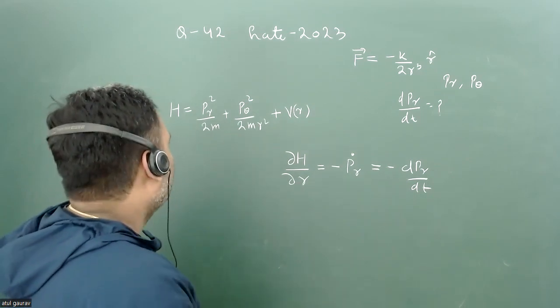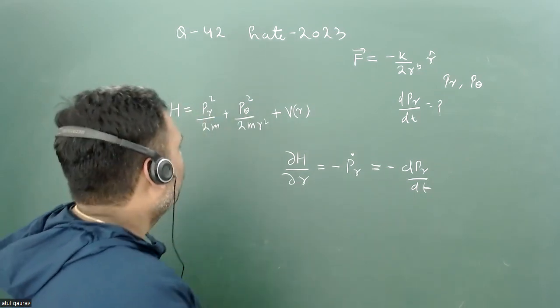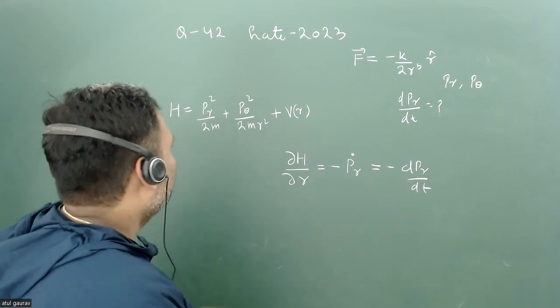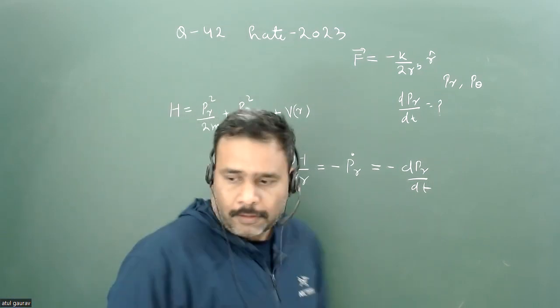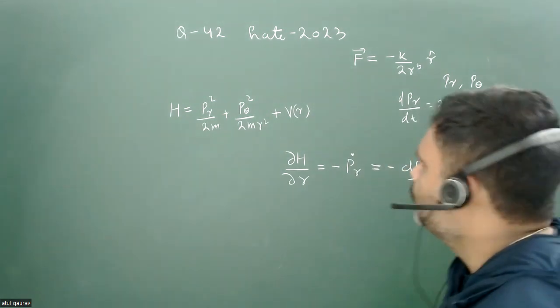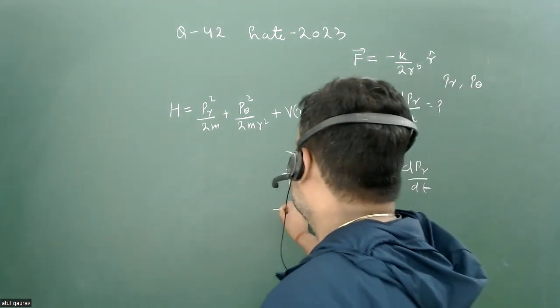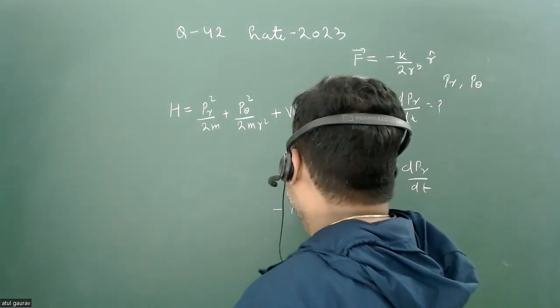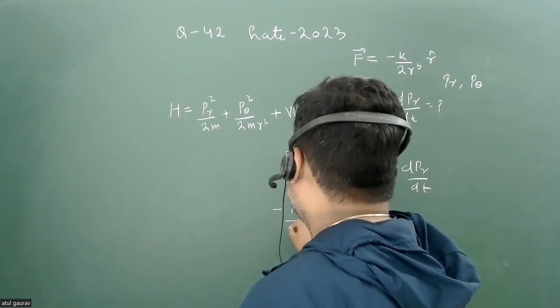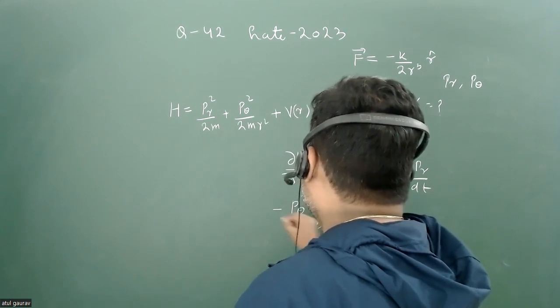So pr, p_theta, and all other terms will be constant. m is the mass of the particle, so we can easily differentiate it. This value is minus p_theta²/mr³.